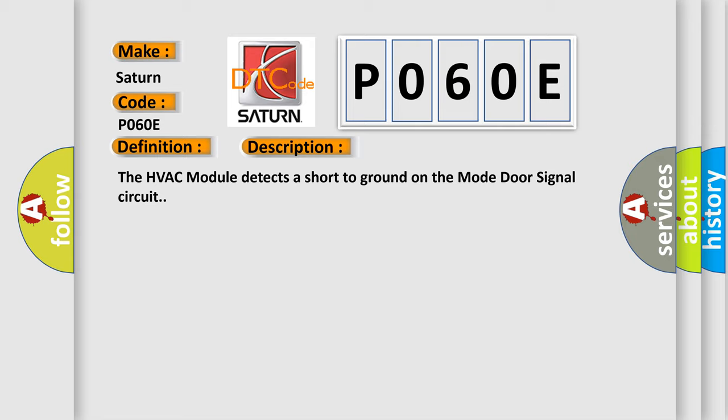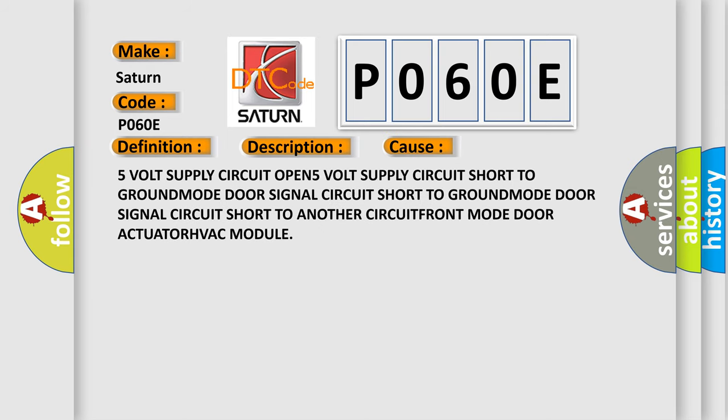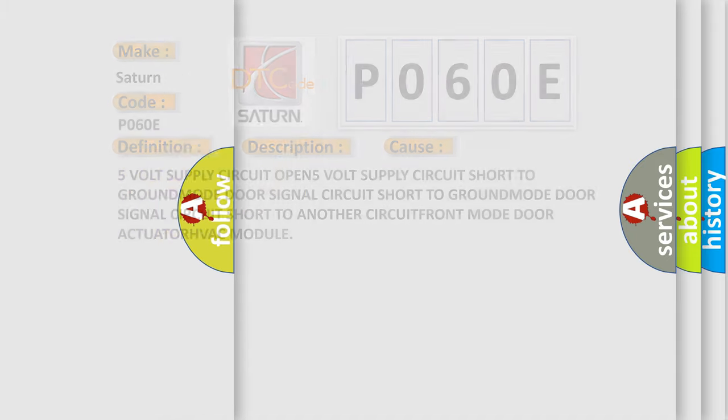This diagnostic error occurs most often in these cases: 5V supply circuit OPEN, 5V supply circuit short to GROUND, MODE door signal circuit short to GROUND, MODE door signal circuit short to another CIRCUIT, FRONT mode door ACTUATOR, or HVAC module. The airbag reset website aims to provide information in 52 languages.